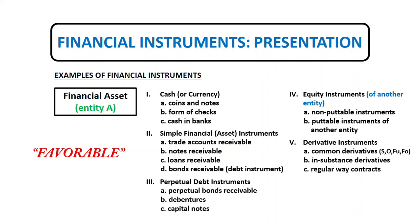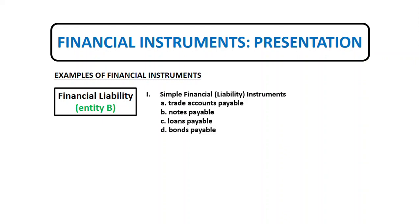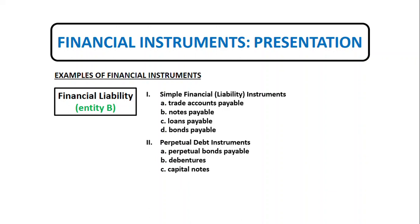For financial liabilities, a financial liability is any liability that is a contractual obligation to deliver cash or another financial asset to another entity, or to exchange financial assets or financial liabilities with another entity under conditions that are potentially unfavorable to the entity. Examples of financial liabilities include simple financial liability instruments like trade accounts payable, notes payable, loans payable, and bonds payable. We also have perpetual debt instruments like perpetual bonds payable, debentures, and capital notes.